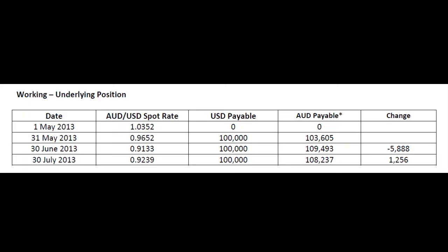On the 1st of May, there is no payable because you haven't actually done anything — all that you've done is order, so there is no transaction at that point. The transaction and when we can book the goods happens on the 31st of May. At that point we have a $100,000 US payable. We convert that to Australian using whatever the spot rate is at the time: $100,000 US at 96.52 gives you 103; $100,000 at 91 gives you 109; $100,000 at 92 gives you 108.